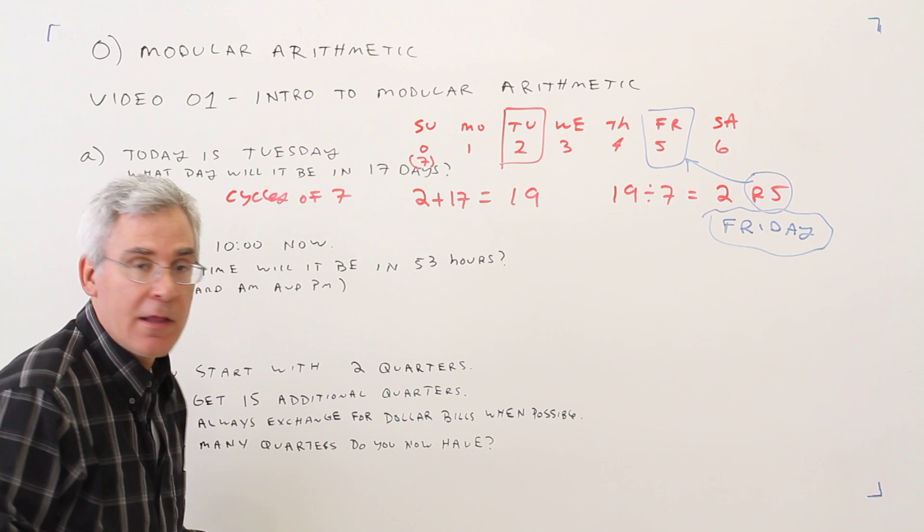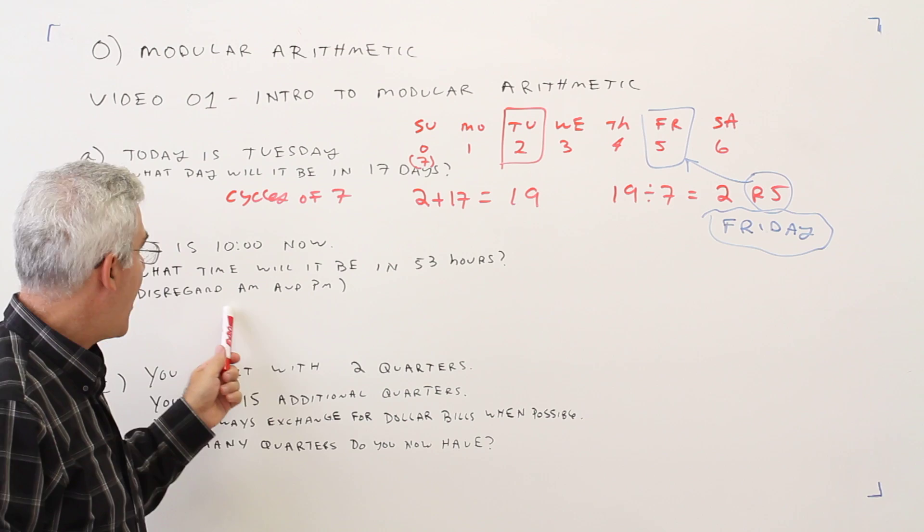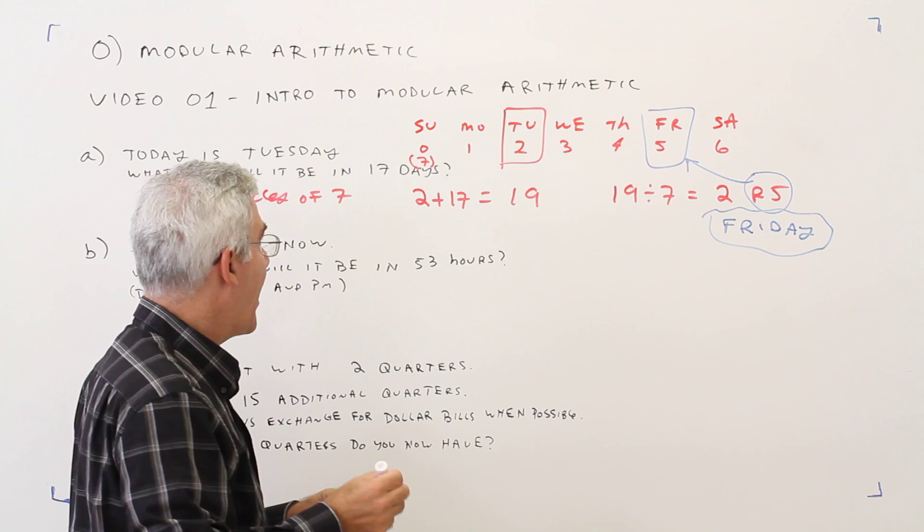Okay, second problem. It is 10 o'clock now. What time will it be in 53 hours? And we're going to disregard a.m. and p.m. Okay, so this is a clock.